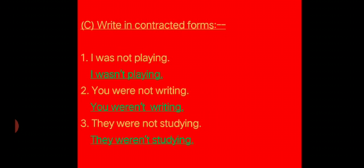In part C you have to write in contracted form. Contracted form is when instead of writing was not or were not, you write wasn't. Like wasn't, w-a-s-n-apostrophe-t. I was not playing becomes I wasn't playing. You were not writing becomes you weren't writing. They were not studying becomes they weren't studying.